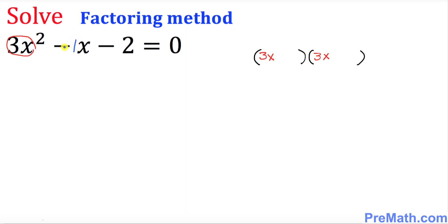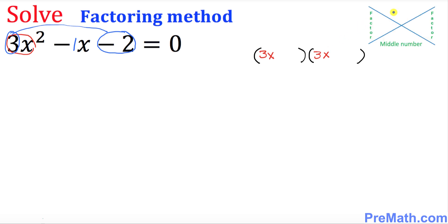So the coefficient is going to become negative 1. The next step is I want you to look at this 3 on the left hand side and negative 2 on the right hand side — I want you to multiply these two numbers. 3 times negative 2 is negative 6. Put the negative 6 on top in the diagram and this middle number, negative 1, right at the bottom underneath.